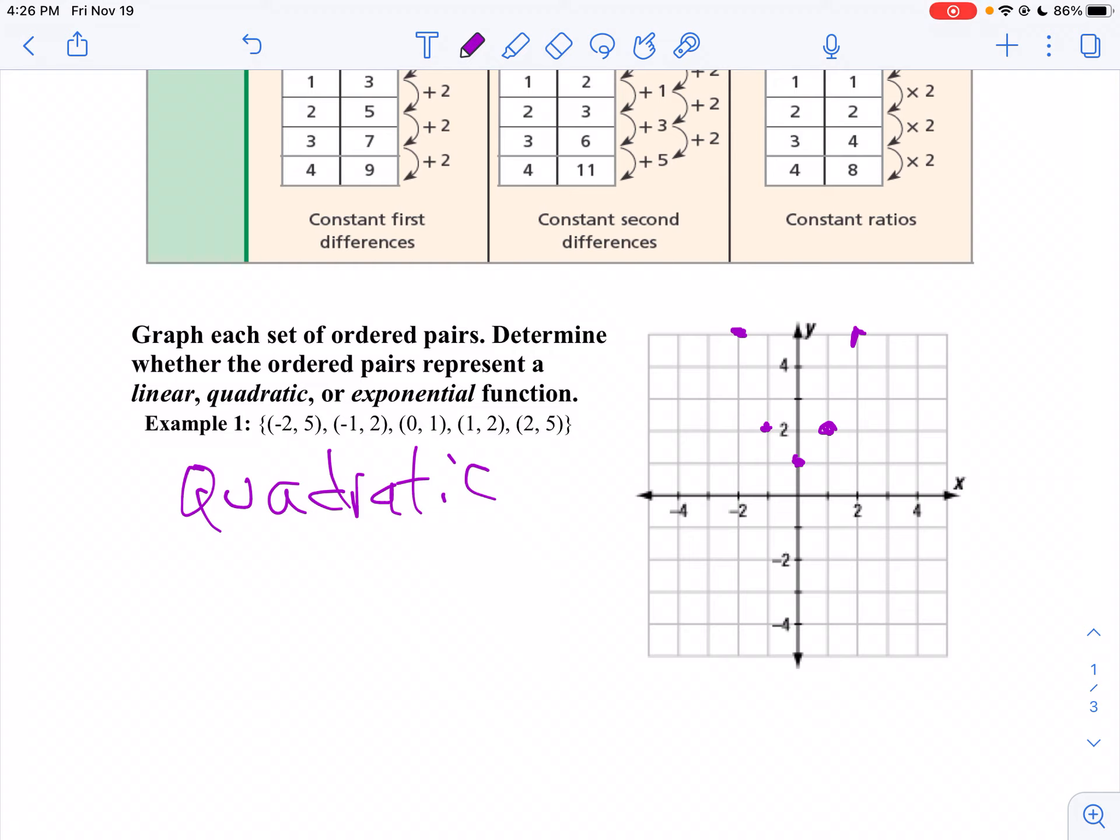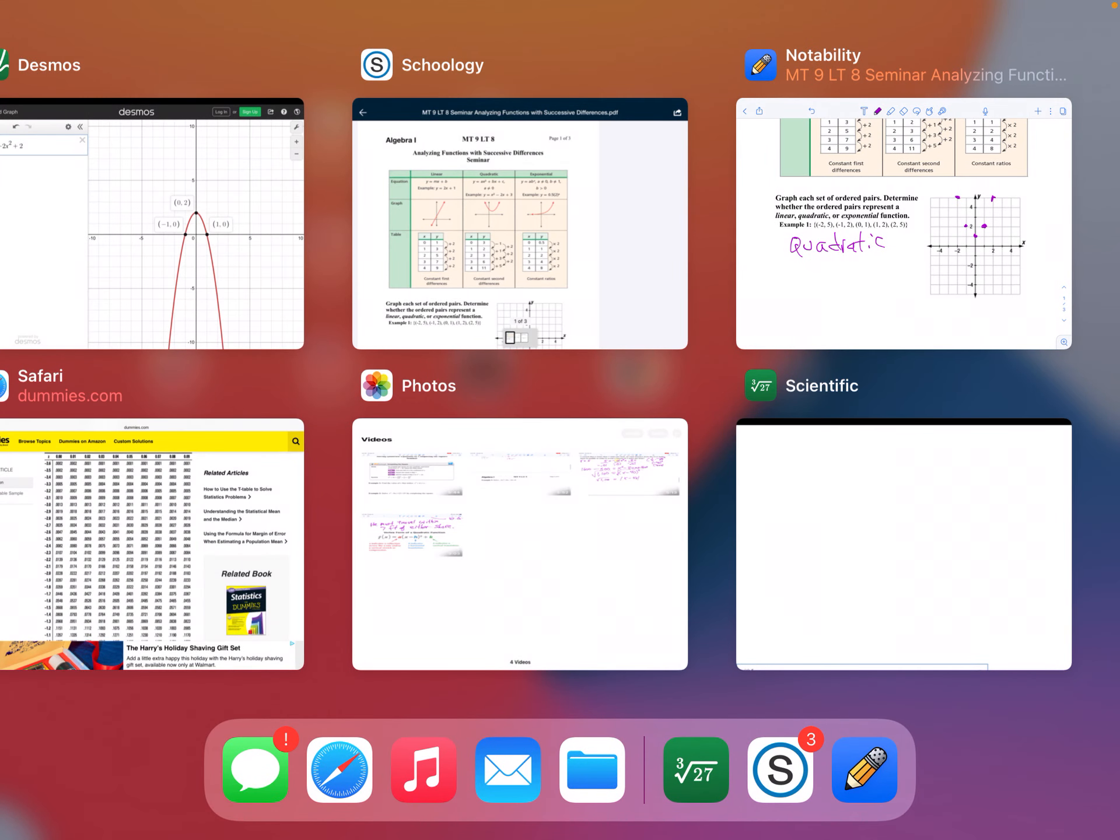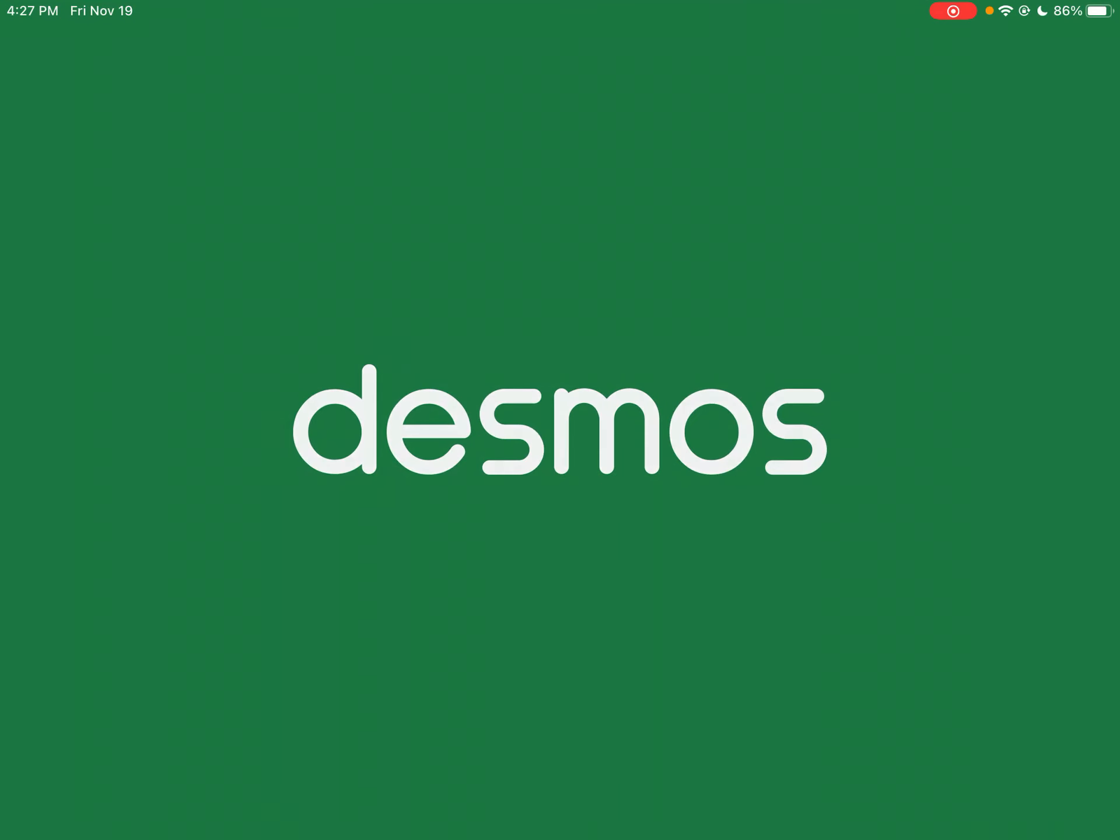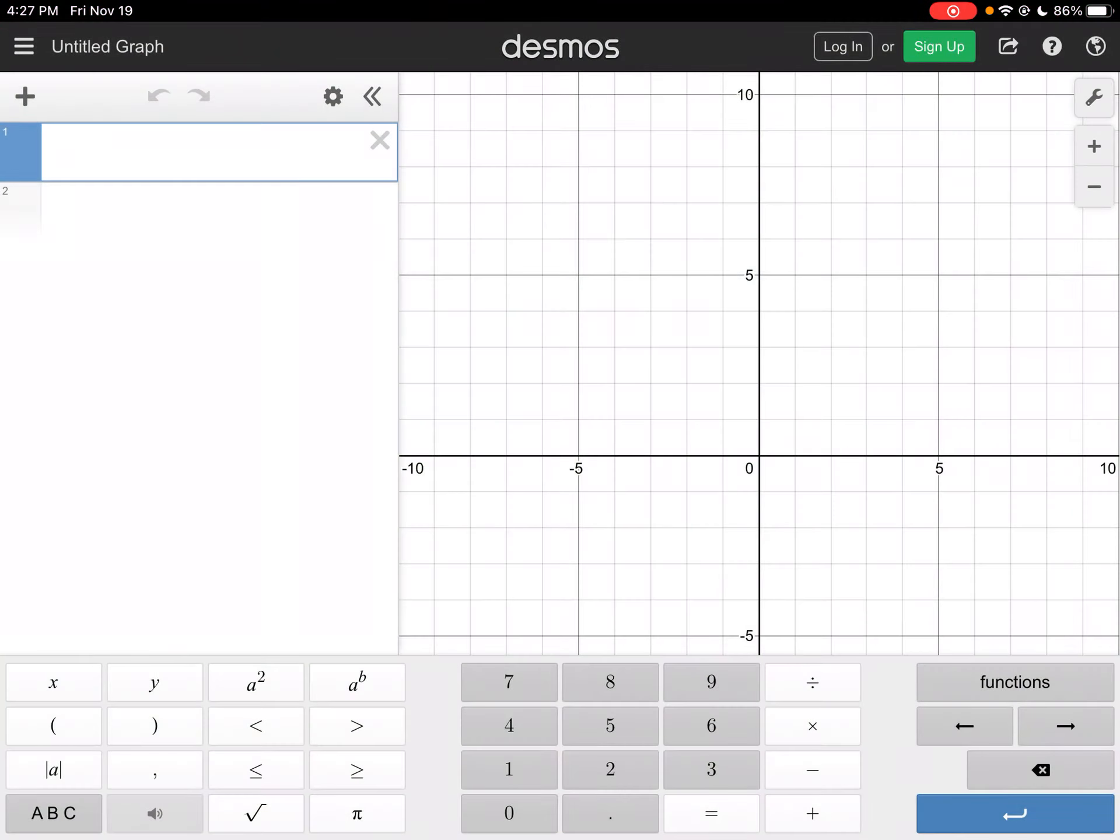So, for example, if I graph negative 2, 5 on Desmos. So how do you graph an ordered pair on Desmos? What an excellent question. You just type in the ordered pair. So what I'm going to do is I'm going to go parentheses, negative 2, comma, 5.